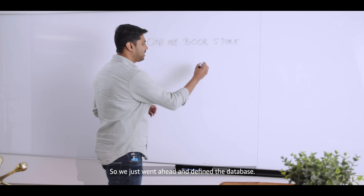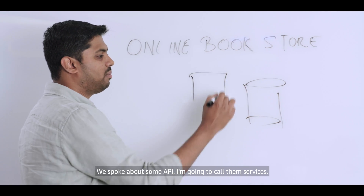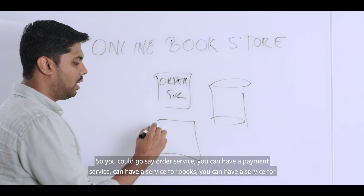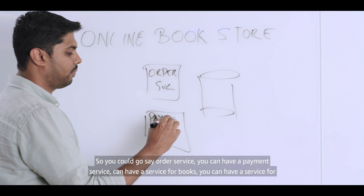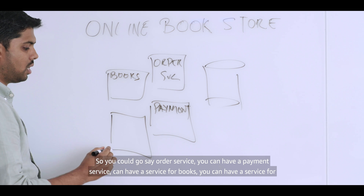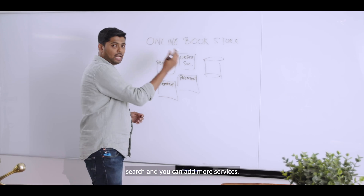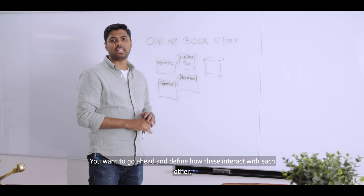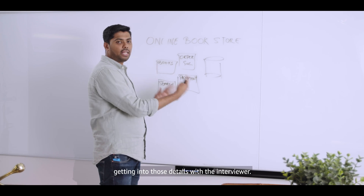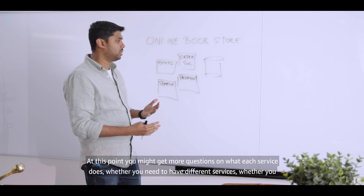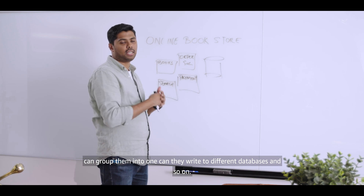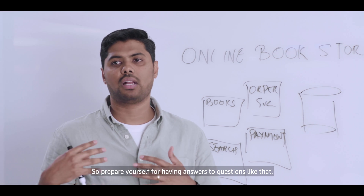Let's see how the architecture is coming along. We defined the database and spoke about APIs — I'll call them services. You could have an order service, a payment service, a service for books, a service for search, and more. Define how these services interact with each other, and whether each has its own database or they share databases. At this point, expect questions about what each service does, whether to group them, and whether they write to different databases.